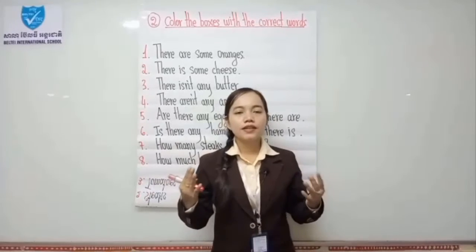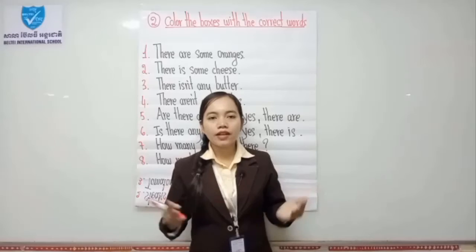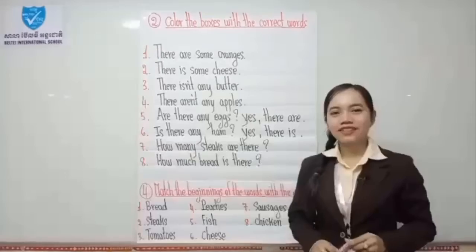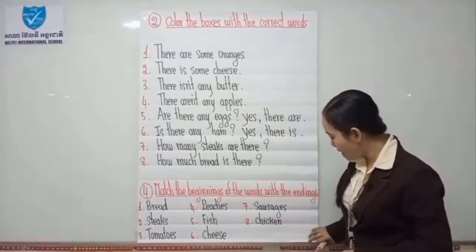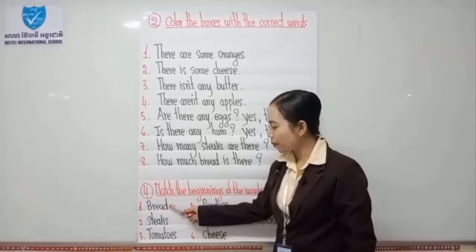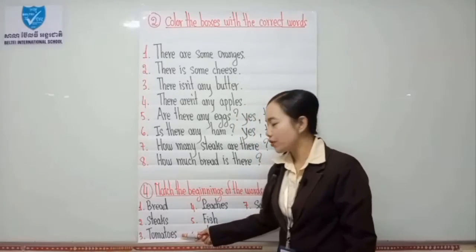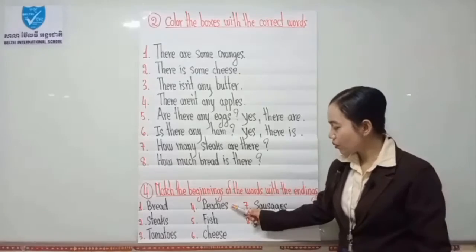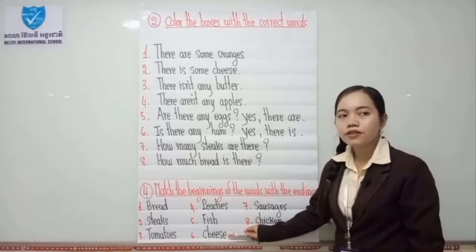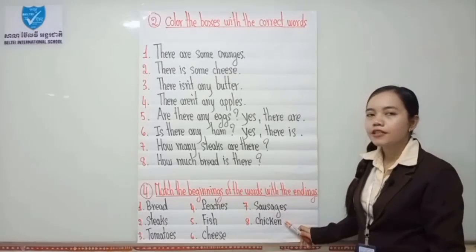Are you ready? Let's take the answers together. We have eight numbers. Number 1: bread. Number 2: steak. Number 3: tomatoes. Number 4: peaches. Number 5: fish. Number 6: cheese. Number 7: sausages. Number 8: chicken.